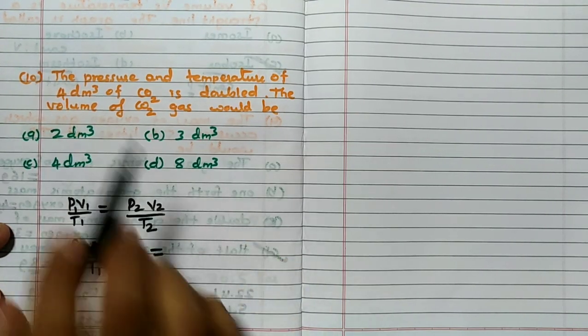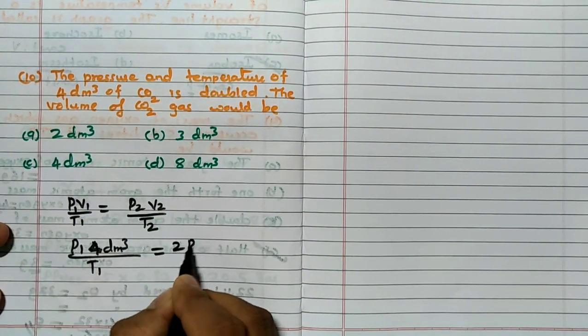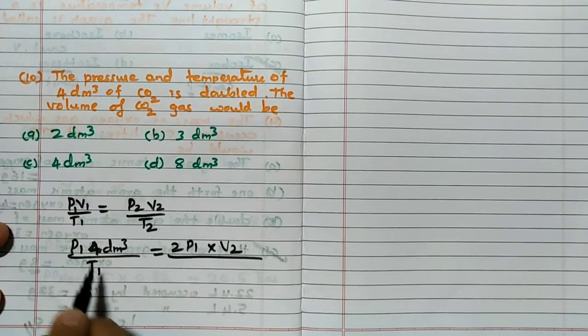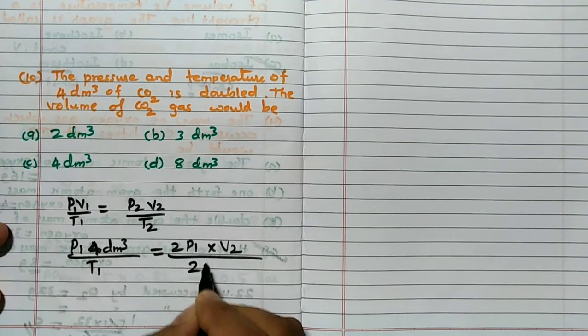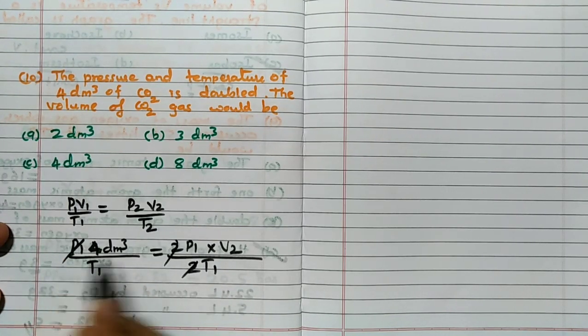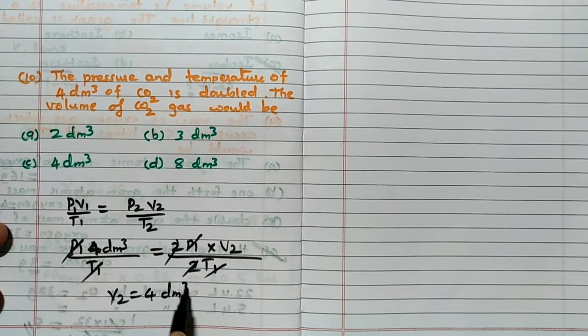But what they have given, when it is doubled, pressure and temperature both are doubled. So this I will write as 2P1 into V2 you have to calculate, divided by temperature is also doubled, I will take it as 2T1. So 2, 2 get cancelled, P1, P1 get cancelled, T1, T1 get cancelled. V2 is equal to 4 dm³.